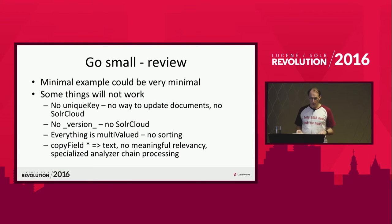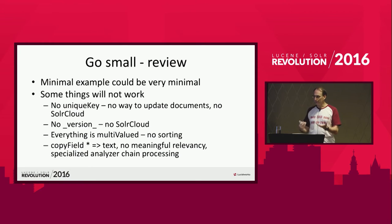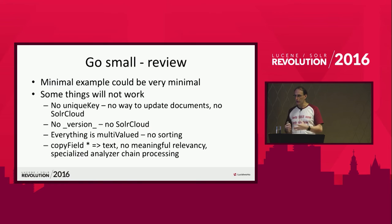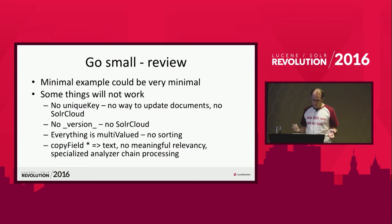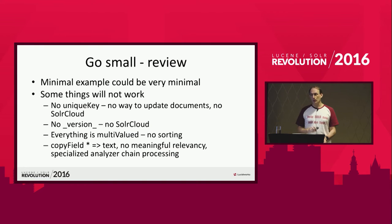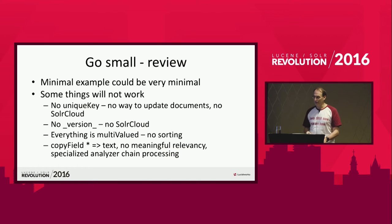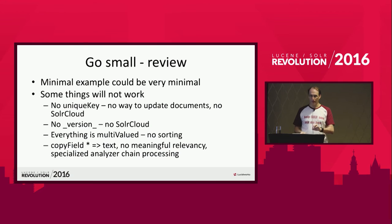We create the core, pass that minimal configuration as a parameter, and post exactly the same files used for the TechProducts example — collection one. It still works: loads in 32 documents, no problem. You can search for lowercase 'iPod,' it matches, it does faceting, brings the results back. The minimal example could be very minimal and still work — that's the power of Solr. Some things won't work though: no unique key, no ID field, no way to update documents, no Solr Cloud. No _version_ field, so Solr Cloud won't work. Everything is multi-valued so sorting doesn't work. Copy field star-to-text means you don't have meaningful relevancy or specialized analysis chain processing. If you're searching against _text_ by default — which is how a lot of schemas are configured — you may be having the same relevance issues anyway.